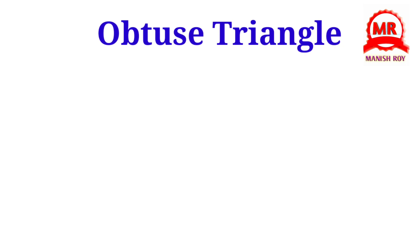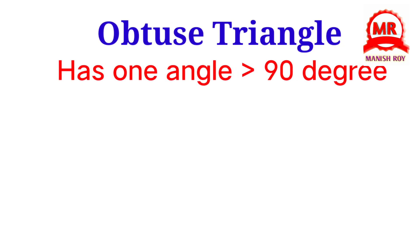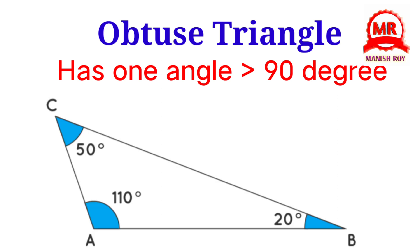Obtuse triangle. An obtuse triangle has one angle greater than 90 degrees. In this figure, in triangle ABC, the measure of angle A is 110 degrees, which is greater than 90 degrees, so it is called an obtuse triangle.